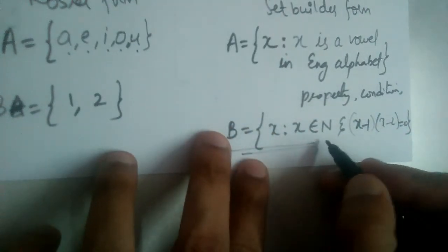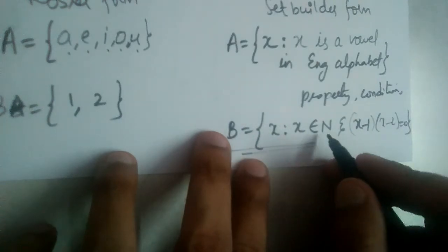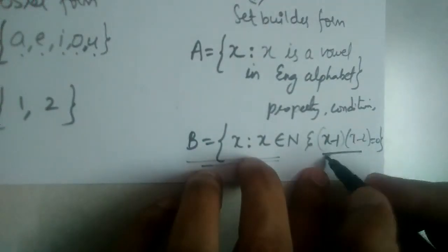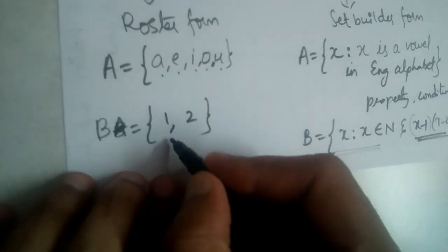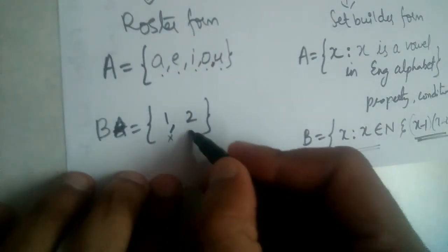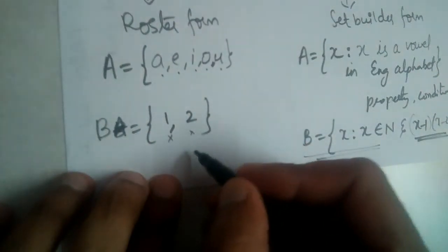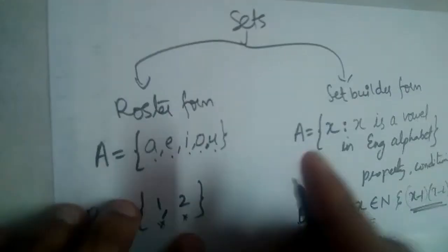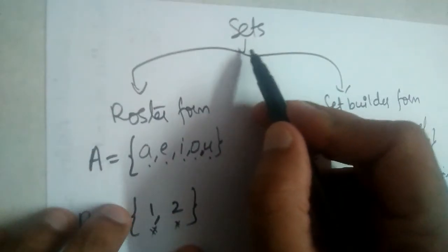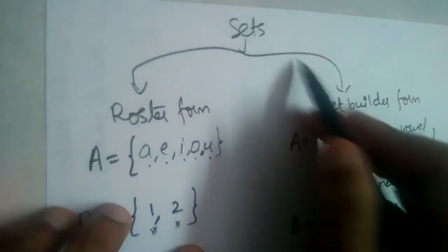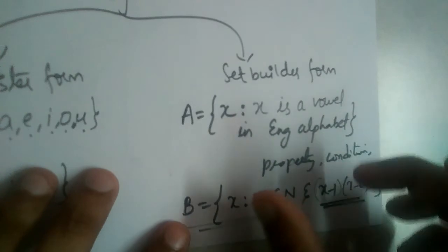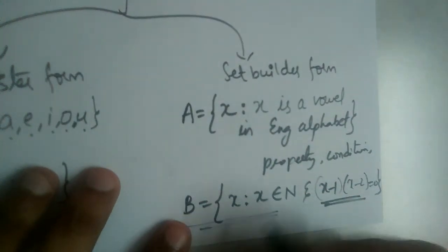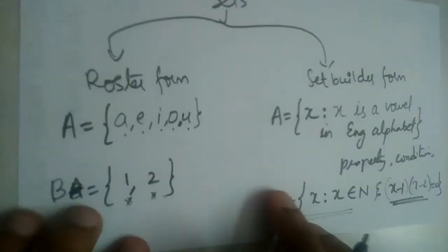x is a natural number, but not just any natural number — only those which satisfy the given condition. Each element is called x, so x is 1 and x is 2. To summarize: sets are represented in two forms — roster form, where we write the actual elements, and set builder form, where we write the property or condition.